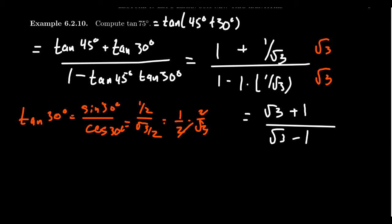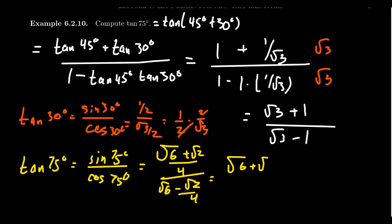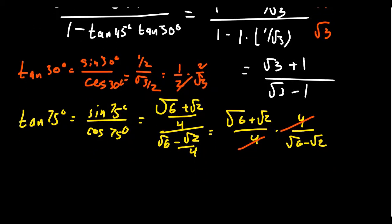I want to compare how we could have done this alternatively. Tangent of 75 degrees equals sine of 75 degrees over cosine of 75 degrees, which we've computed previously. Sine of 75 degrees is root 6 plus root 2 over 4. Cosine of 75 degrees is root 6 minus root 2 over 4. Multiplying by the reciprocal gives root 6 plus root 2 over 4 times 4 over root 6 minus root 2, and the 4s cancel.